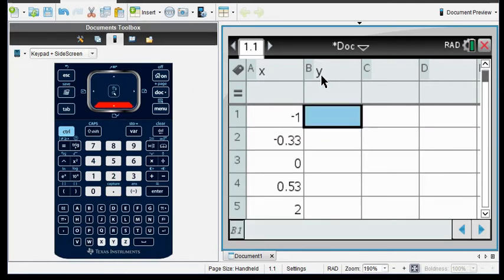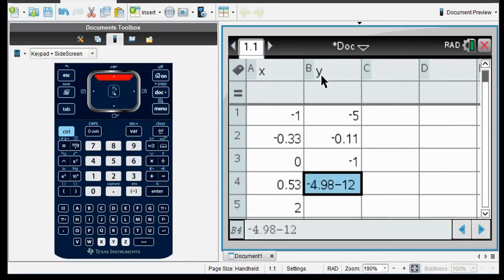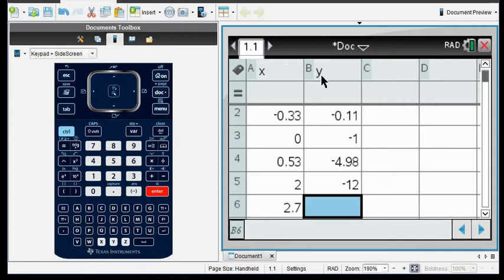For my Y list, I start with negative 5, negative 0.11, negative 1, negative 4.98, negative 12, and—whoops, it didn't register my enter—negative 12 and 0.